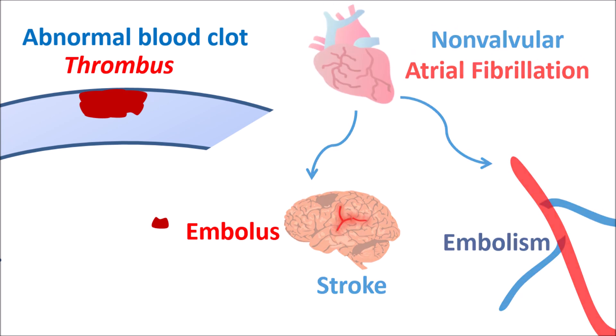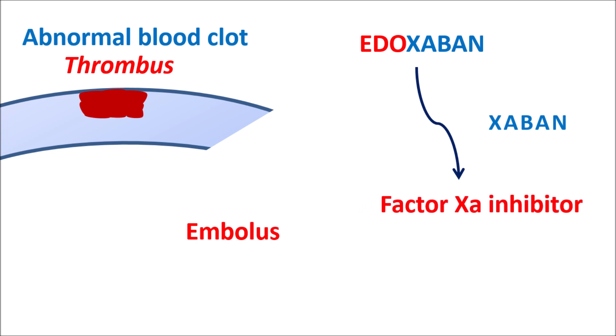We can use different types of anticoagulants. Among them, Edoxaban is one anticoagulant with the suffix '-xaban,' which indicates that this drug acts as a factor Xa inhibitor. Factor Xa plays a key role in clot formation. In people with thromboembolism or risk for thrombus formation, Edoxaban can be given to control thrombus formation.